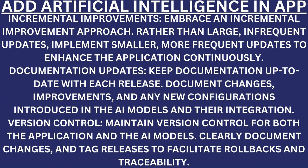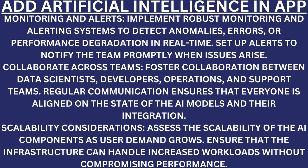Incremental improvements. Embrace an incremental improvement approach — rather than large, infrequent updates, implement smaller, more frequent updates to continuously enhance the application. Documentation updates. Keep documentation up to date with each release — document changes, improvements, and any new configurations introduced in the AI models and their integration. Version control. Maintain version control for both the application and AI models — clearly document changes and tag releases to facilitate rollbacks and traceability. Monitoring and alerts. Implement robust monitoring and alerting systems to detect anomalies, errors, or performance degradation in real time. Set up alerts to notify the team promptly when issues arise.